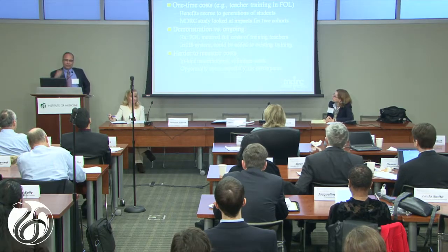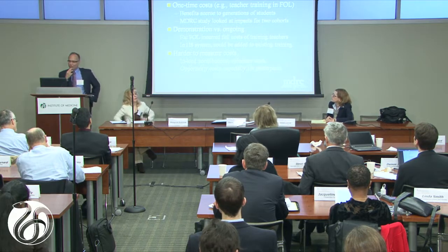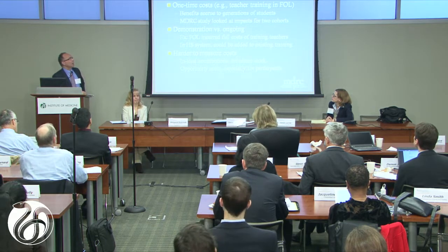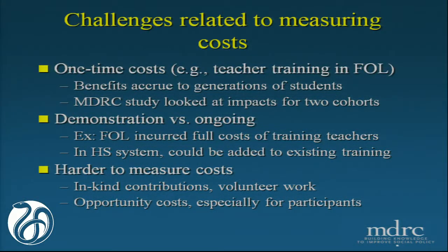I just want to touch upon a few challenges related to measuring costs. The first that is especially problematic sometimes in prevention programs for kids is how do you deal with one-time costs? In Foundations of Learning, for example, teachers were trained and there was a cost of putting them through training at the beginning, and two cohorts of Head Start children were studied. But presumably those trained teachers, if they stay in their jobs, will be able to keep benefiting kids and reducing problem behavior for years to come. So how do you take those costs that were initially incurred and spread them out over time? That's an issue that would be great to have more standards about.